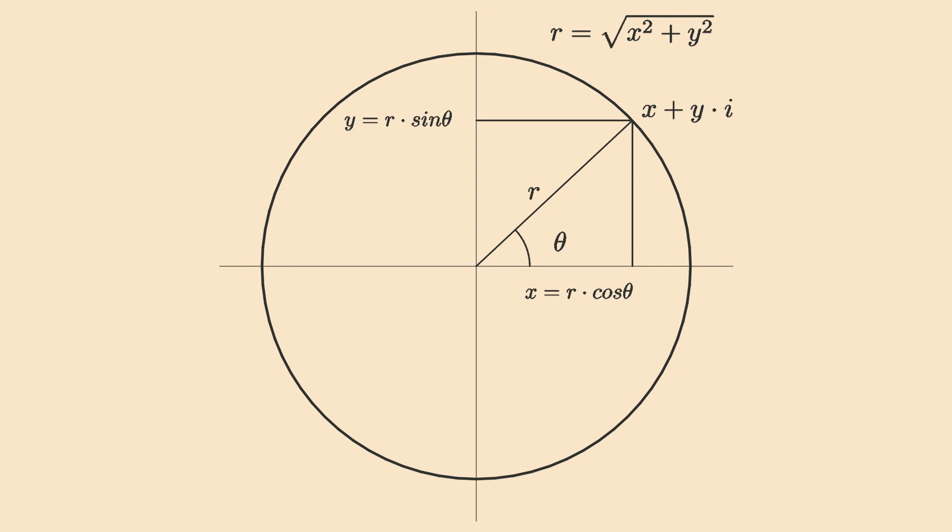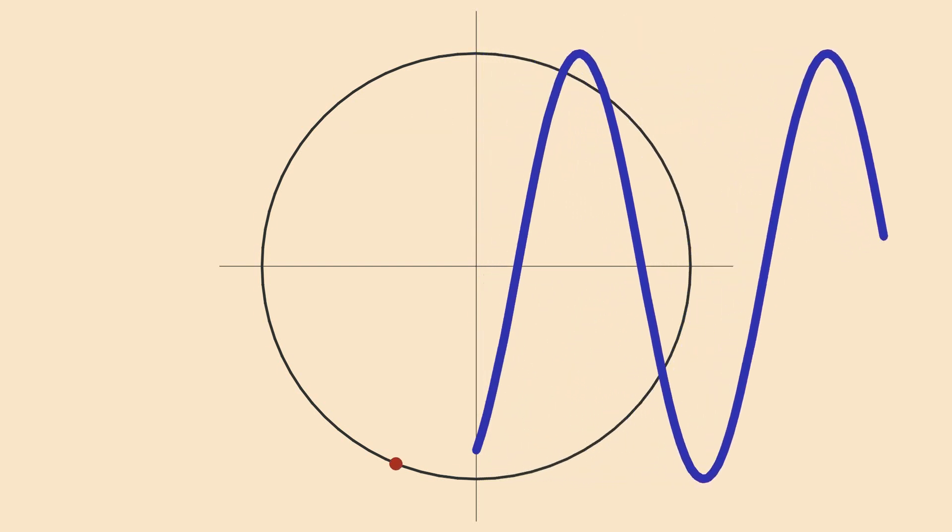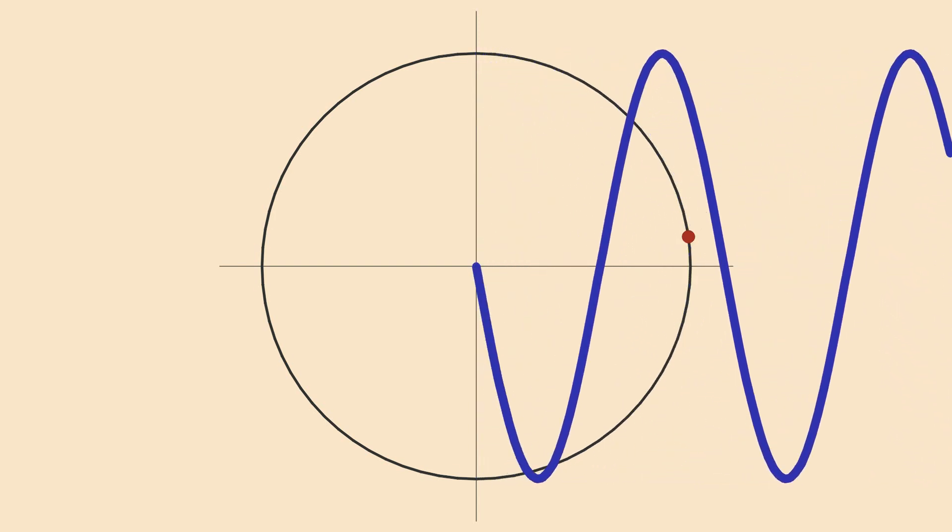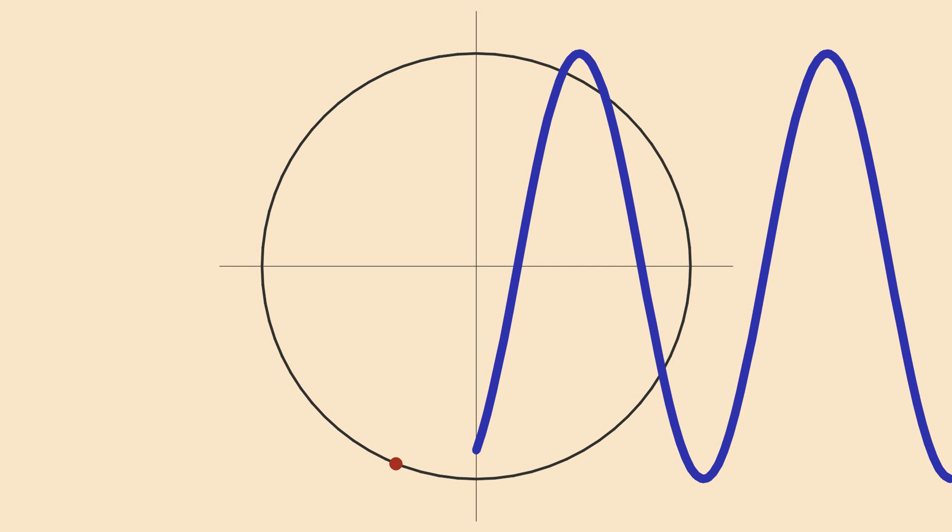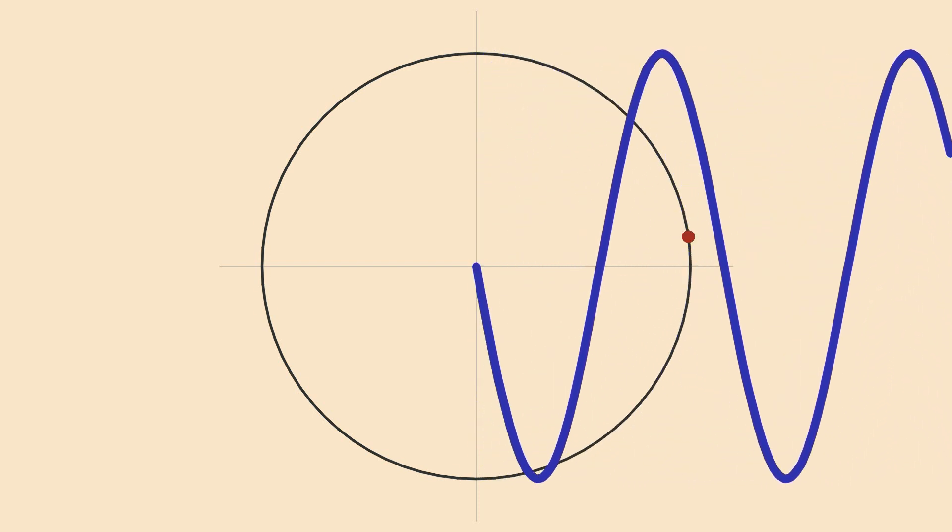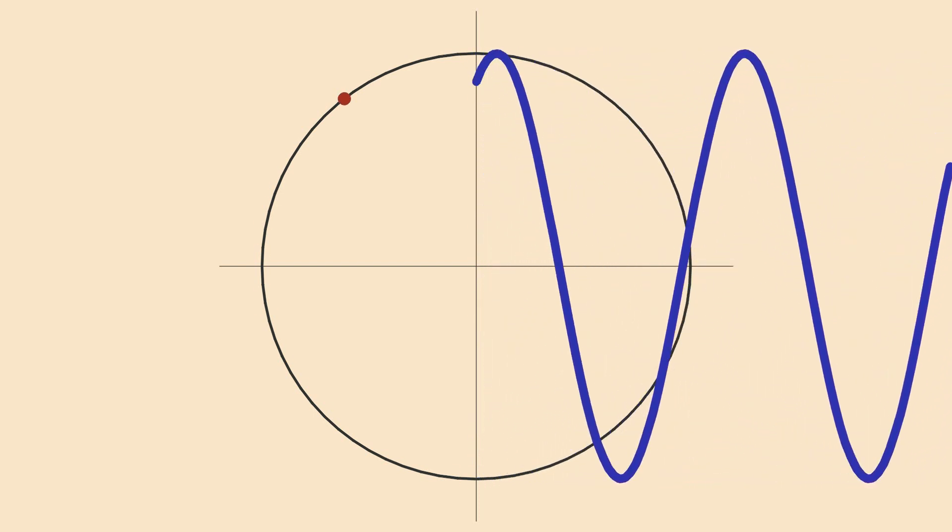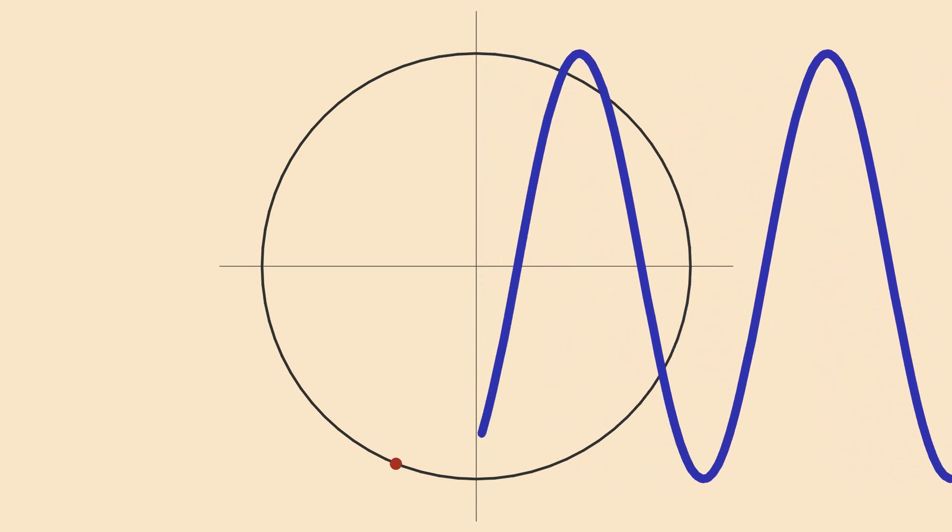That's the main reason why complex numbers are used all over the place in physics and engineering. And remember that a sine wave is just a rotation that you project on the vertical axis. So complex numbers are also used for describing sound waves, electromagnetic waves, and even probability waves.